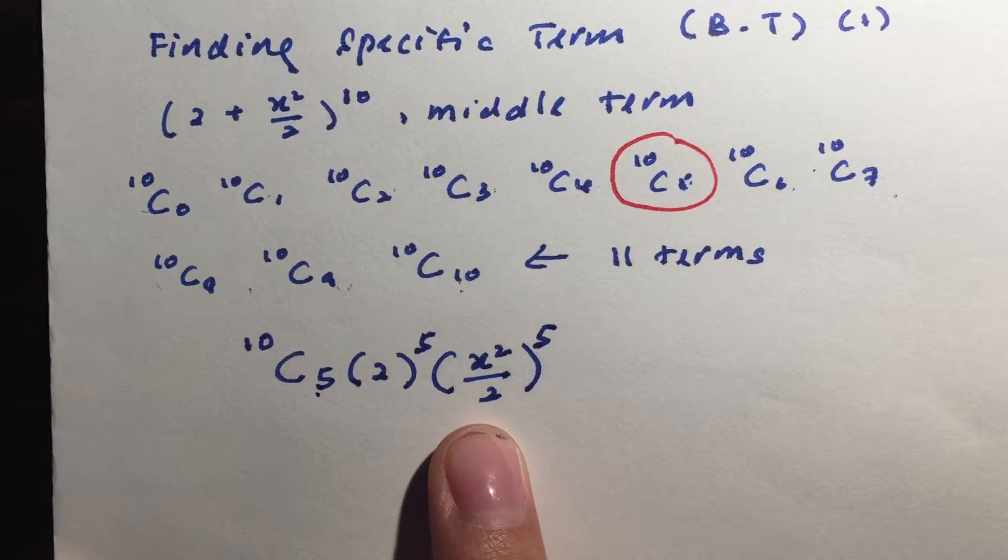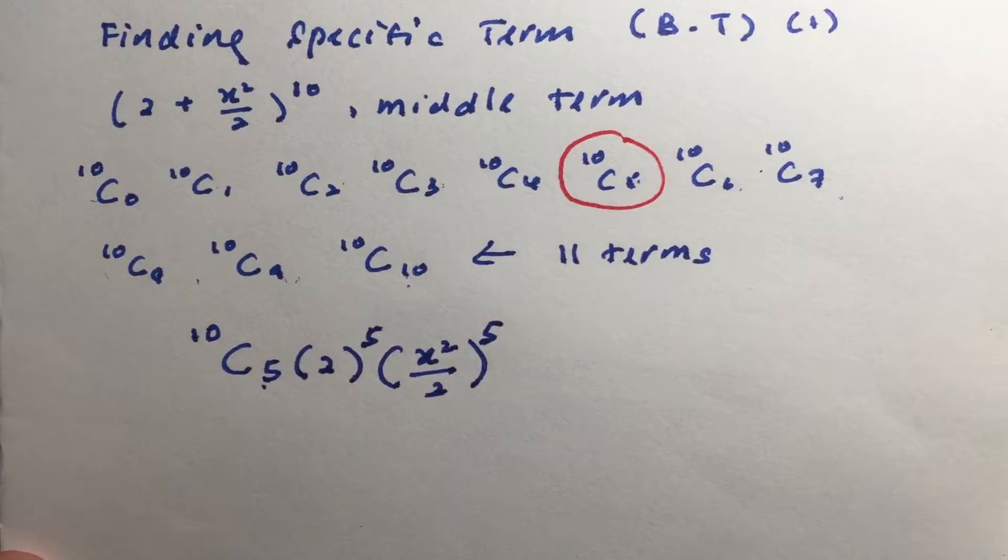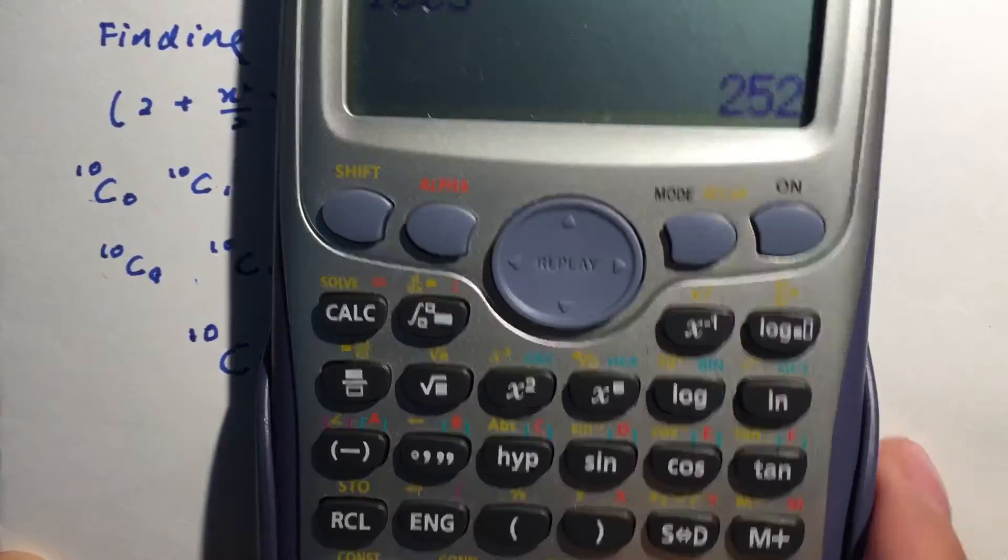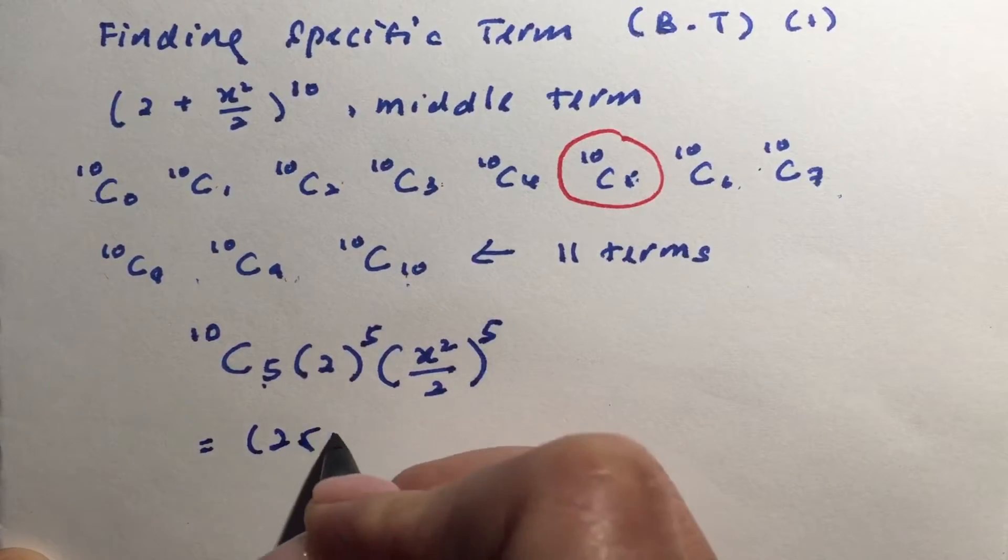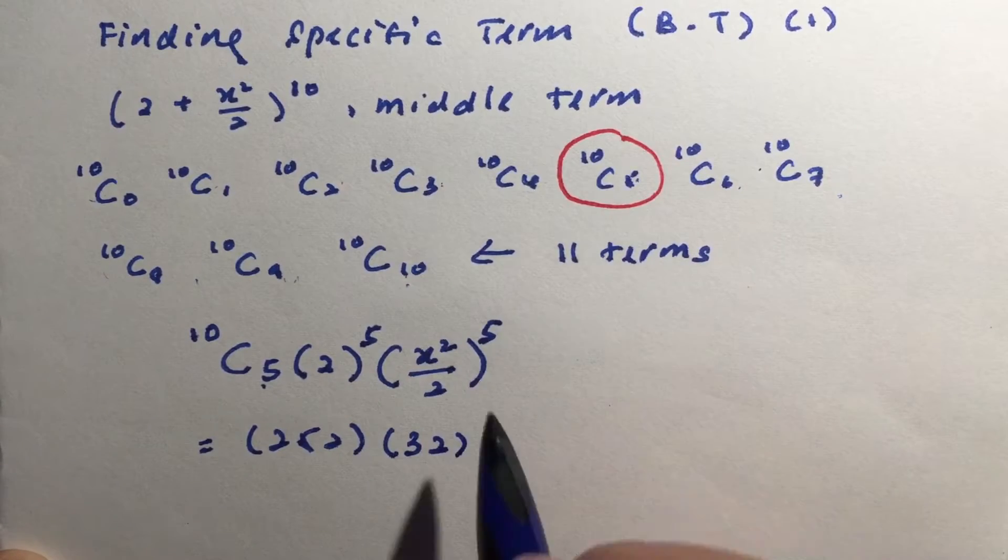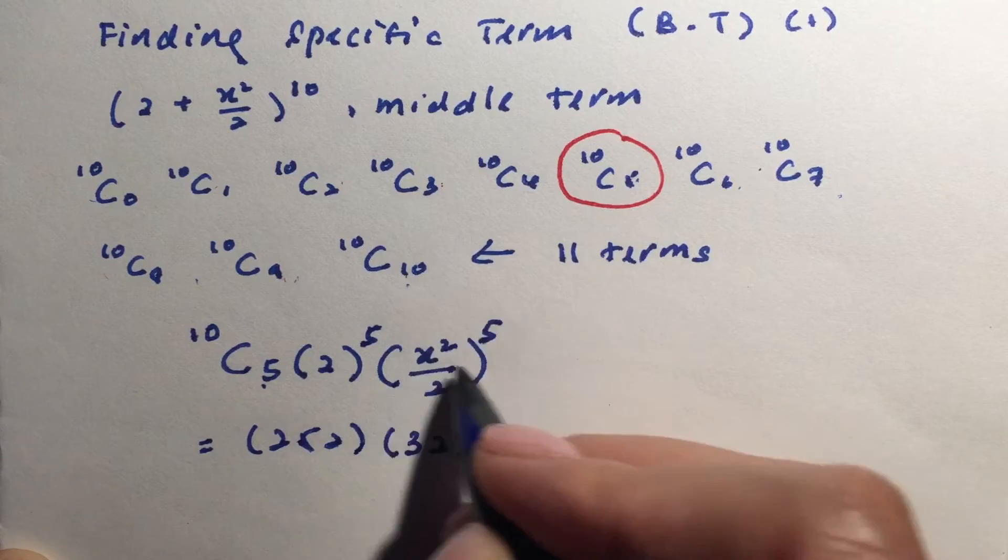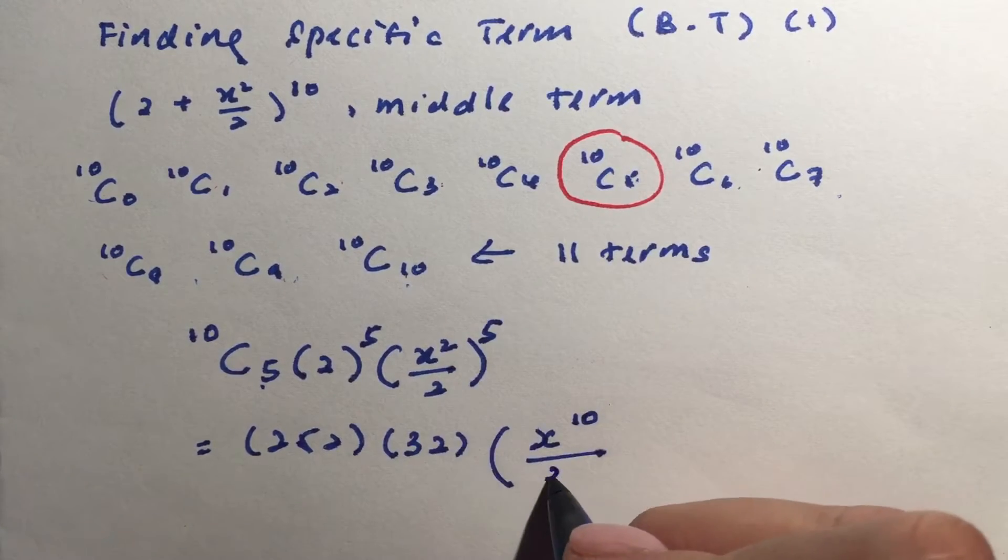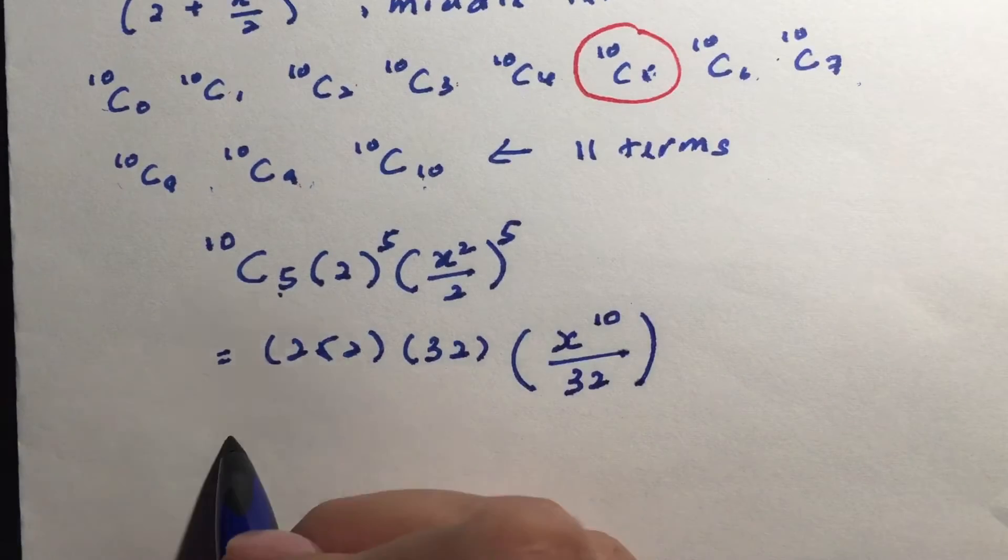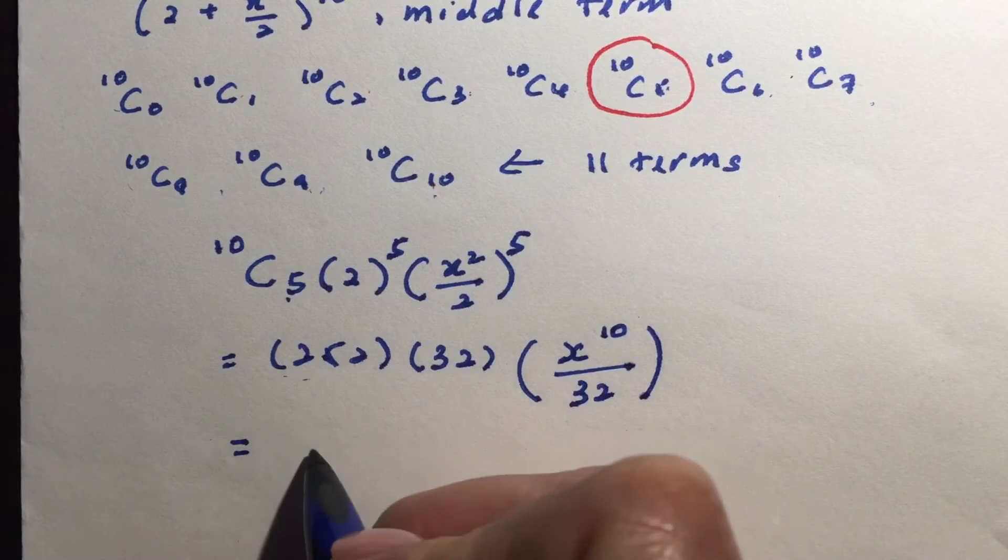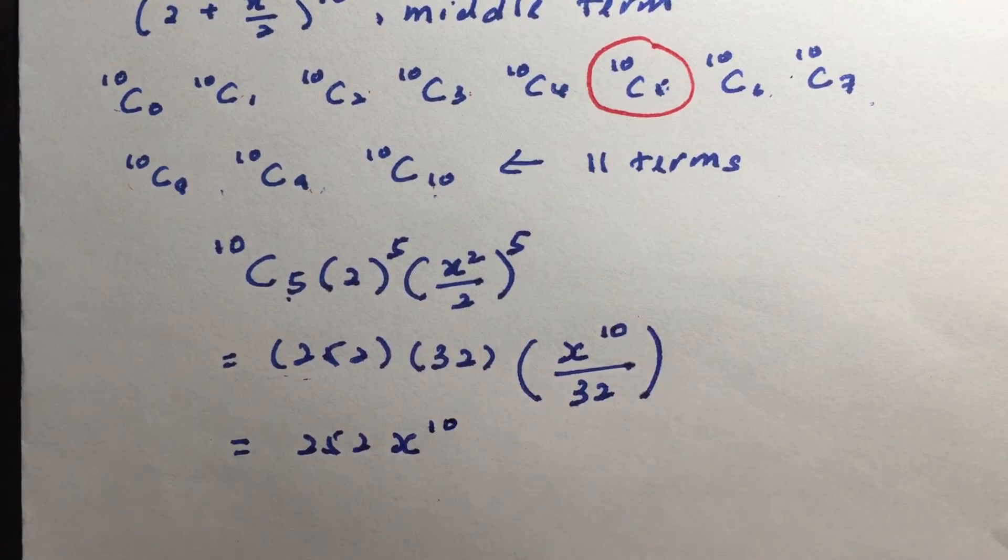And what we can do now is to actually evaluate this. So 10 choose 5 is going to give me 252. So I will have 252. 2 to the power of 5 will give me 32. And this one here, x squared, when you raise the power of 5, so I will be able to have it as x to the power of 10. And here, 2 to the power of 5 again will give me 32. Simplifying, you realize that 32 and 32 will divide each other out. So I'm only left with 252 x to the power of 10.